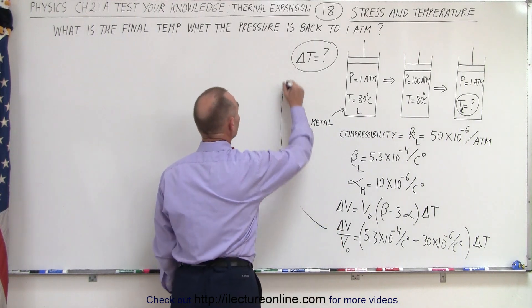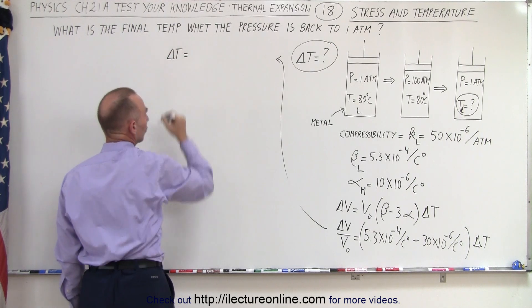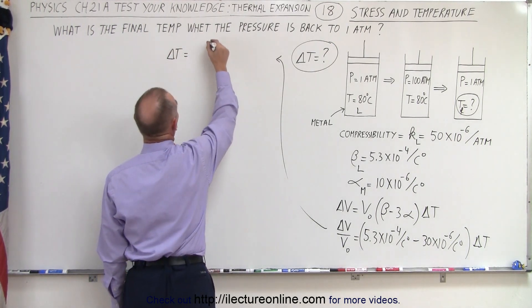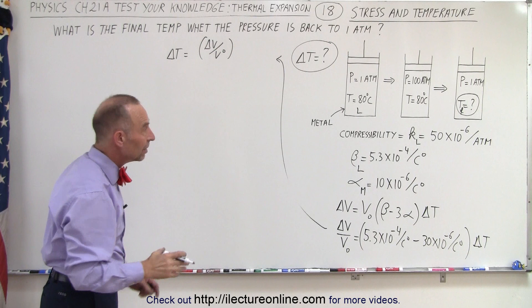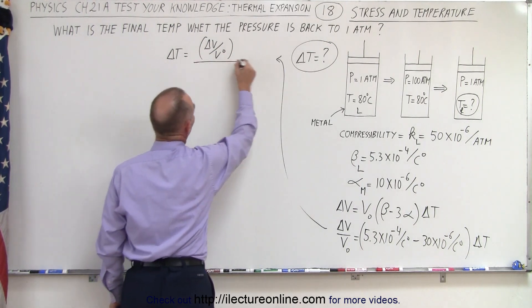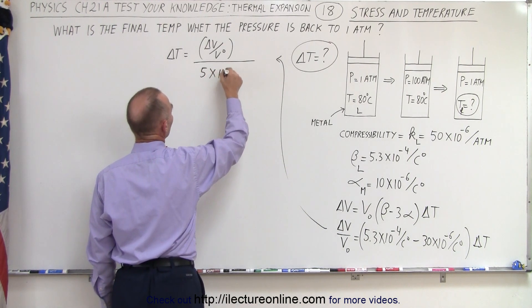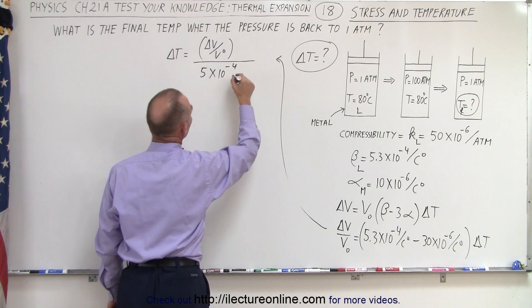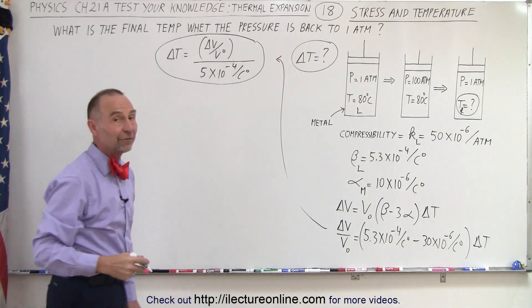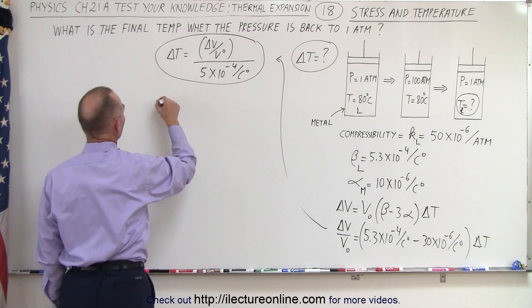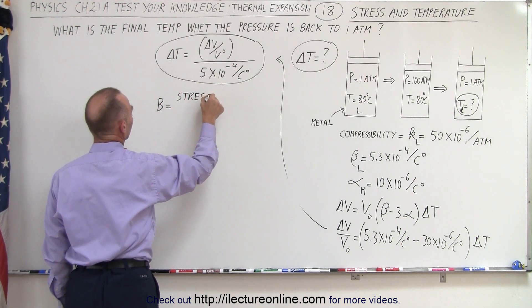So when we come up here we can calculate delta T in terms of everything else. Delta T is going to be equal to delta V over V naught — this represents the strain caused by that pressure — divided by 5 times 10 to the minus 4 per centigrade degree. Now we have an equation that gives us delta T, but we still need to find the stress, the strain value. Remember, the bulk modulus is by definition equal to stress divided by strain.